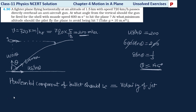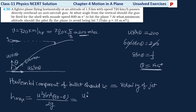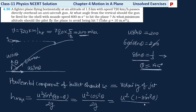So here we apply the concept of maximum height. The plane must fly at an altitude greater than the bullet's maximum height so it won't be hit. The maximum height h_max equals u² sin² θ divided by 2g. But since we derived the formula with angle from horizontal, and here we found angle from vertical, we substitute (90° − θ), giving us u² cos² θ divided by 2g.